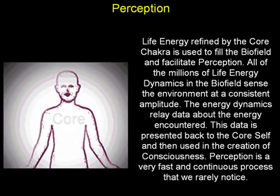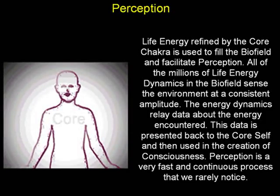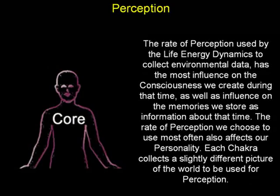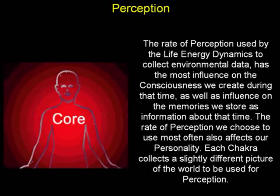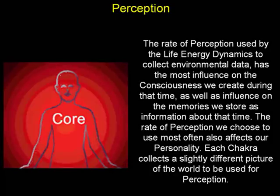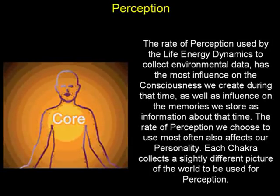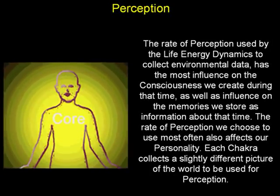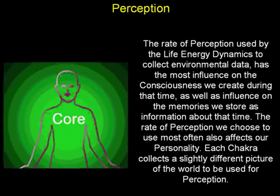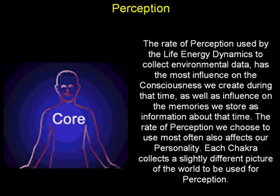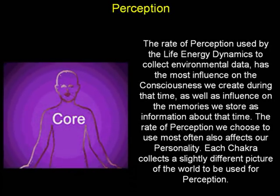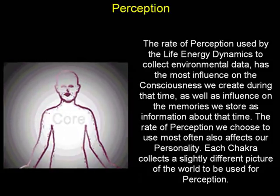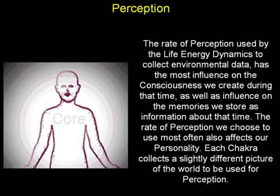Perception is a very fast and continuous process. The rate of perception used by the life energy dynamics to collect environmental data has the most influence on the consciousness we create during that time, as well as influence on the memories we store as information about that time. The rate of perception we choose to use most often also affects our personality. Each chakra collects a slightly different picture of the world to be used for perception.